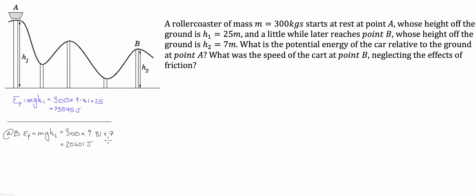So what do we do next? If we are not taking into account any energy being lost to heat and sound, the difference in potential energies between point A and point B is going to be energy that's been converted from potential energy to kinetic energy. The total energy when the cart is at rest is equal to 73,575 joules — that is our total energy ET. At point B, this is made up of potential energy and kinetic energy.